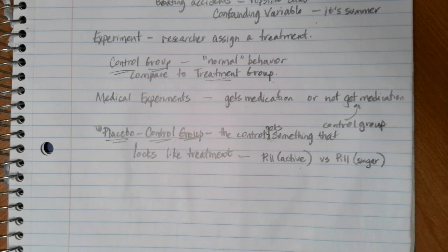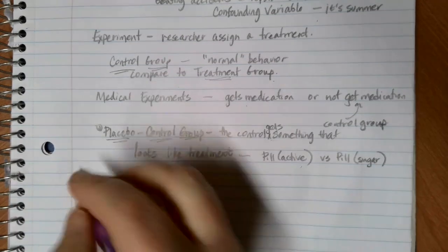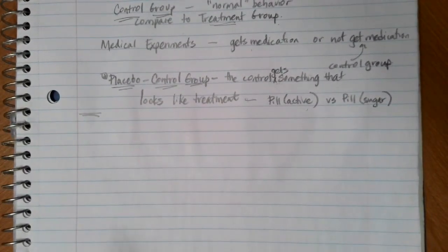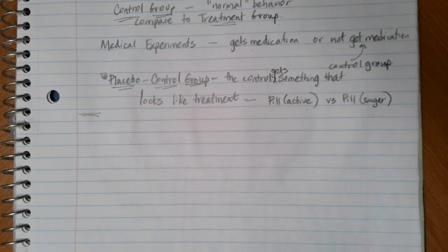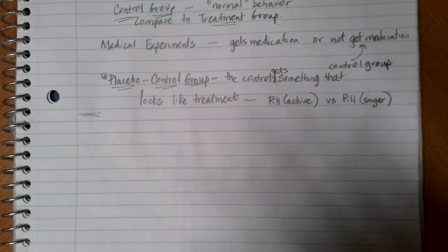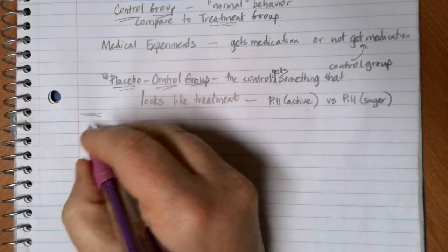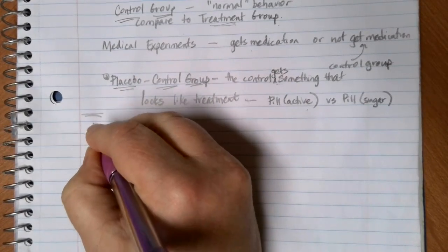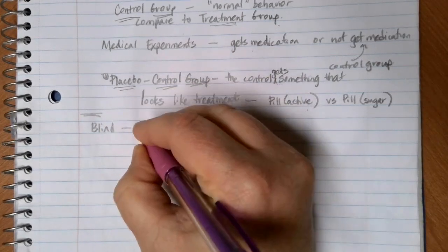Let's see, what other vocabulary things do we have here when we're talking about experiments? Other types of things that can affect the experiment is going to be who knows that the experiment is going on. So some other ways that we can devise experiments is we can have things called a blind experiment.